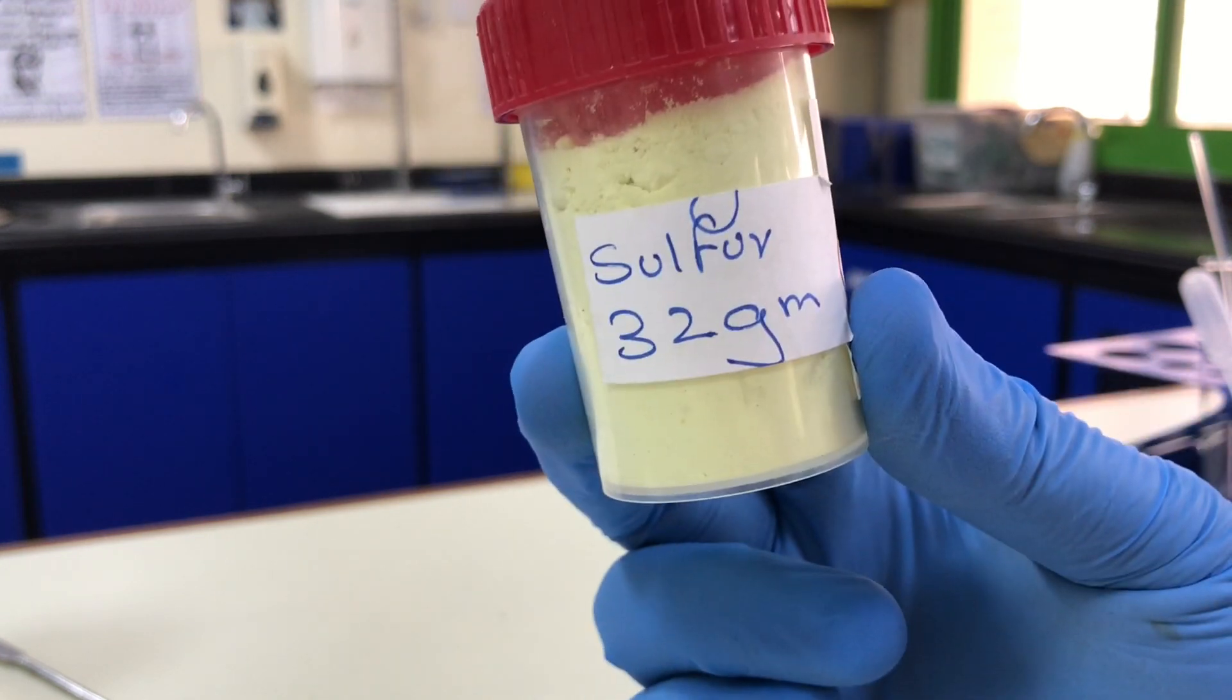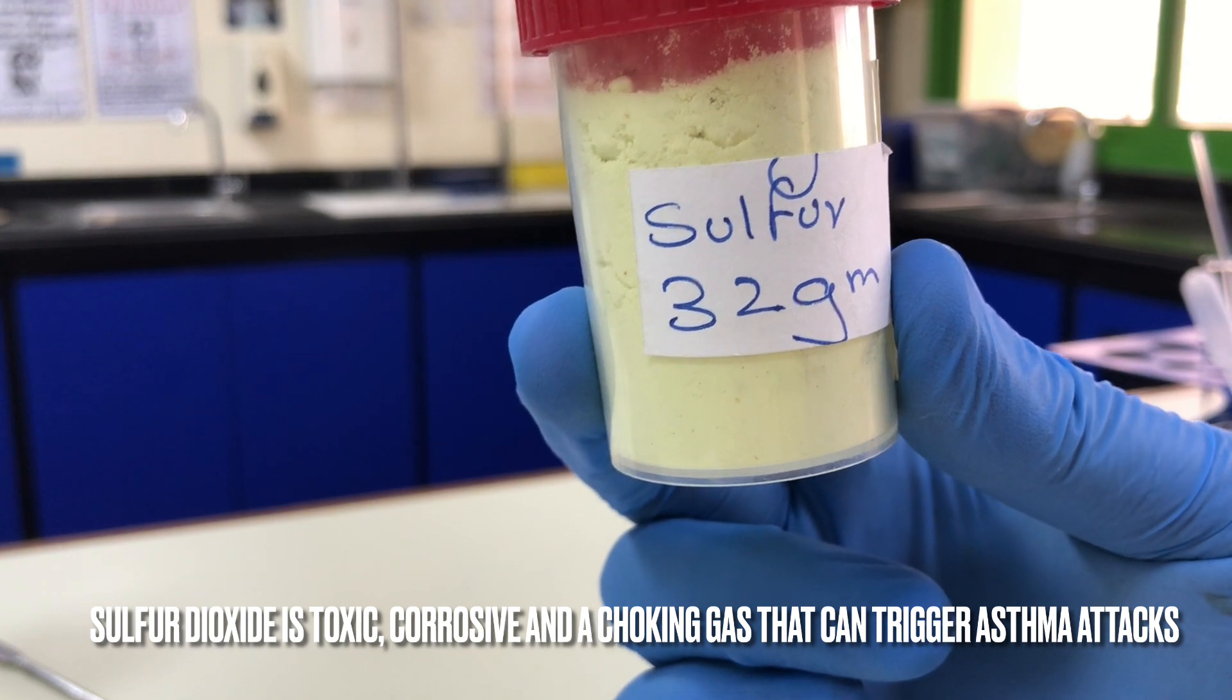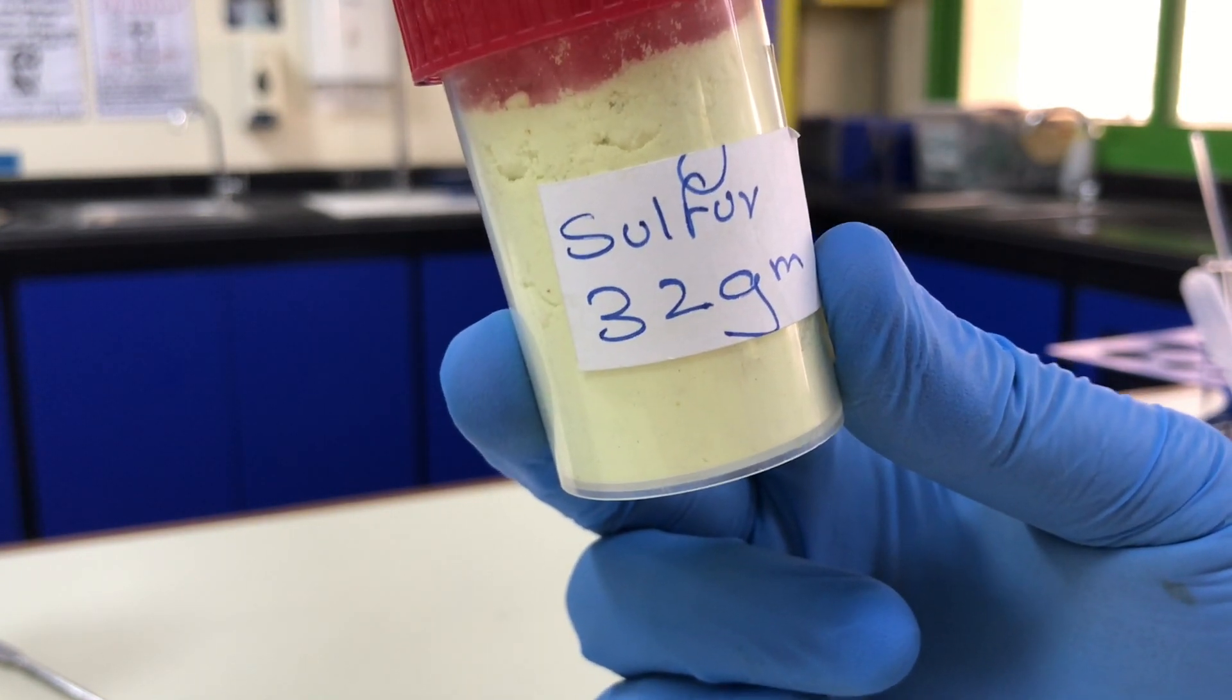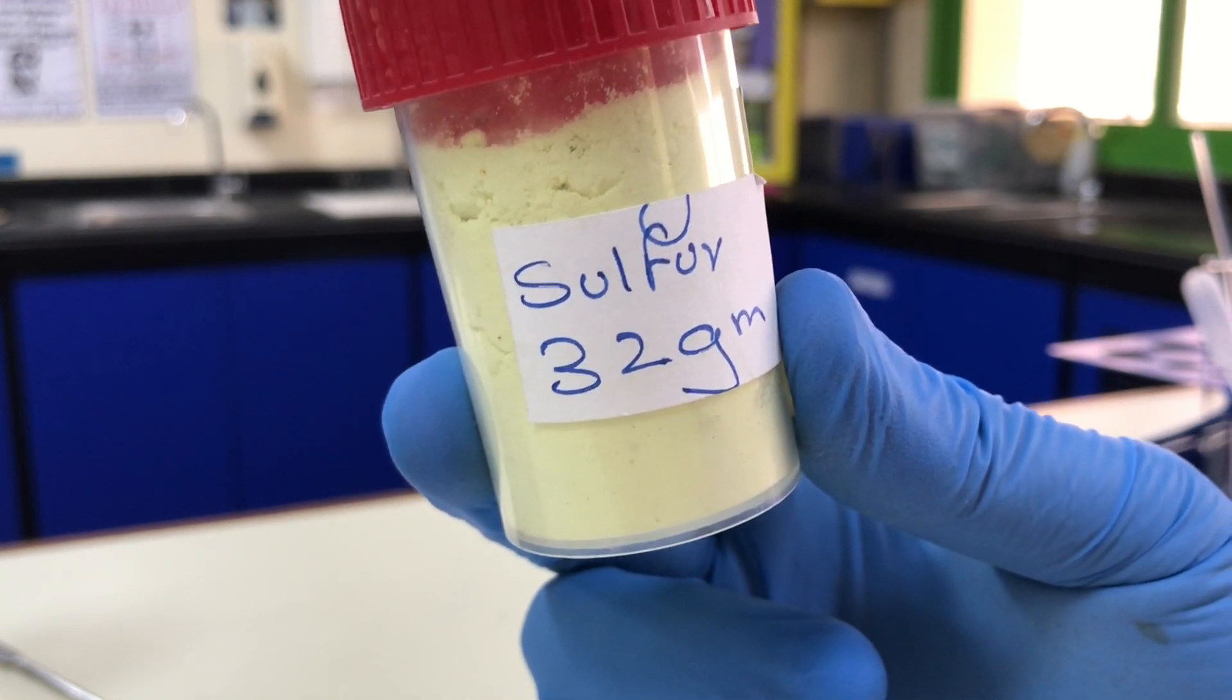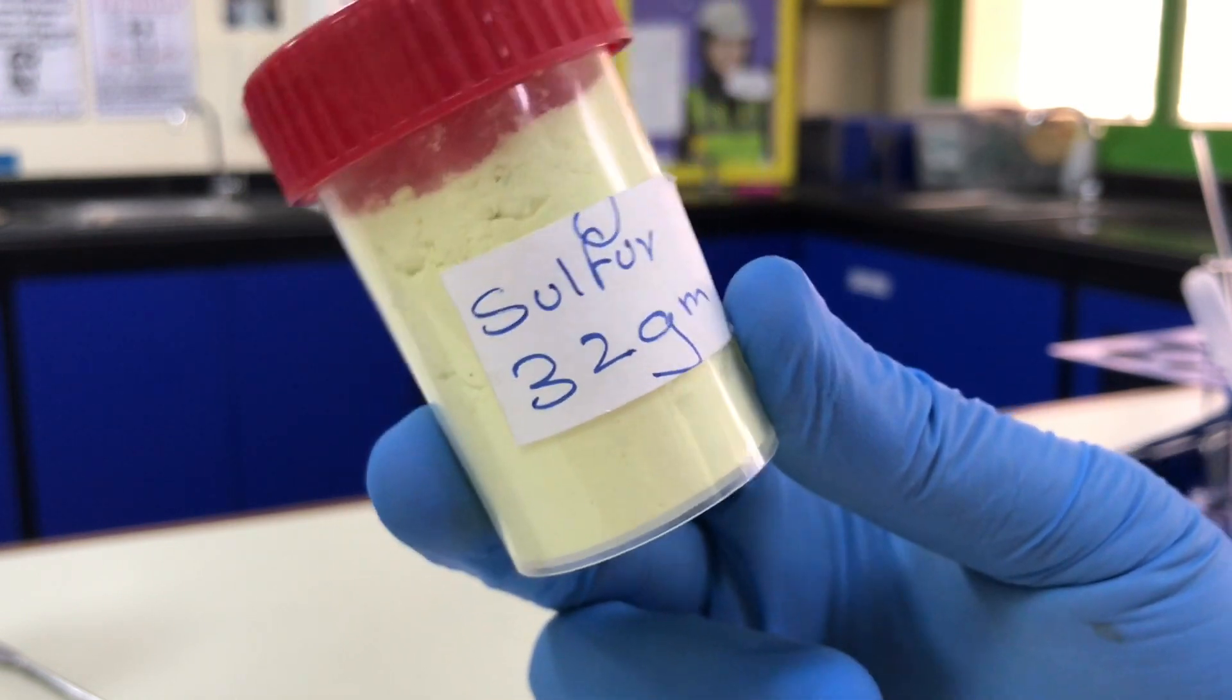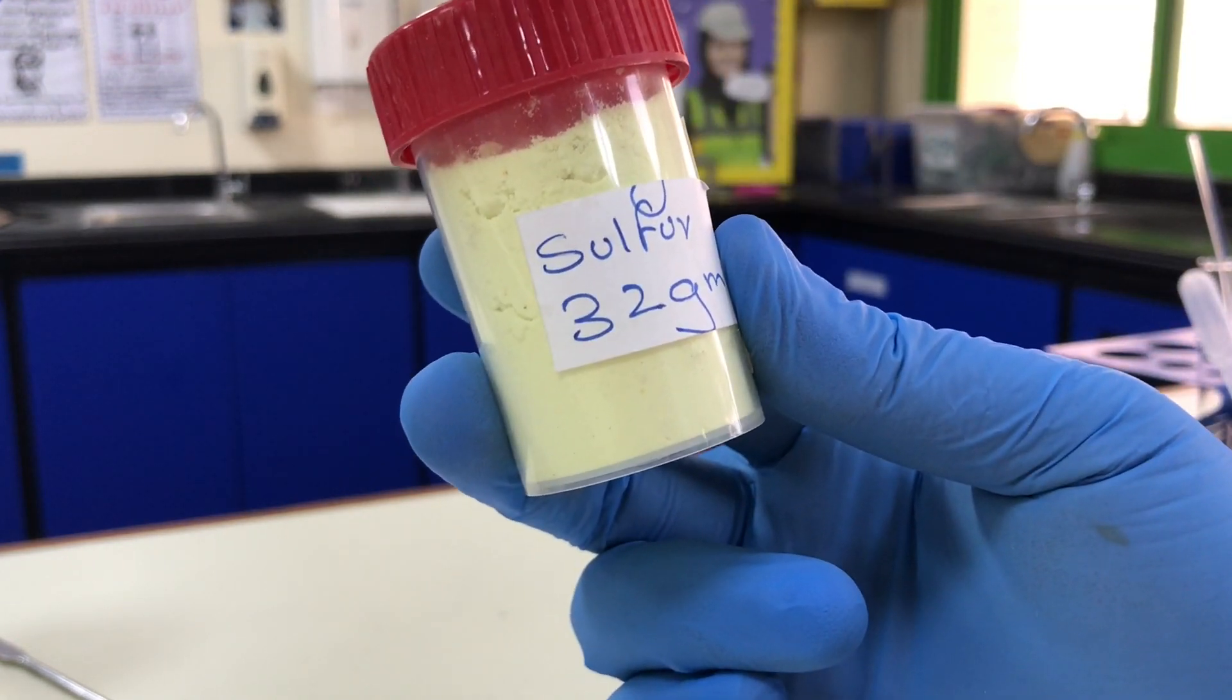The problem with sulfur is that the gas is toxic and you can have real issues with asthmatic students who are very sensitive to sulfur dioxide. So what I need to do is do it on a very small scale, something that can be handled within a well-ventilated area. I need to first produce the sulfur dioxide and then test it with some universal indicator solution.